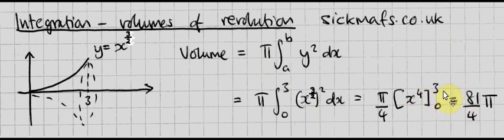And what do you get? Well, you get 3 to the power 4, which you know is 81. So 0 does nothing. So you get 81 over 4 pi. And that is it.